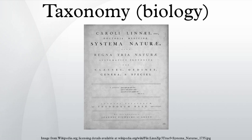His works implemented a standardized binomial naming system for animal and plant species, which proved to be an elegant solution to a chaotic and disorganized taxonomic literature. As a result, the Linnaean system was born, and is still used in essentially the same way today as it was in the 18th century. Currently, plant and animal taxonomists regard Linnaeus' work as the starting point for valid names.